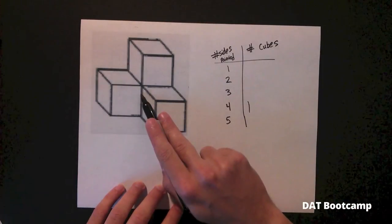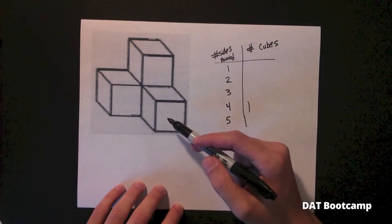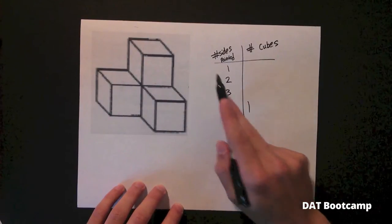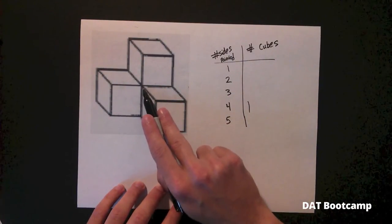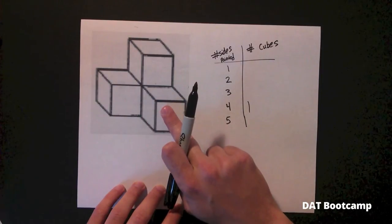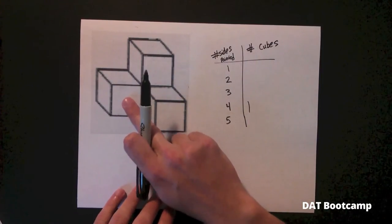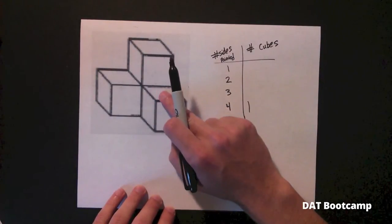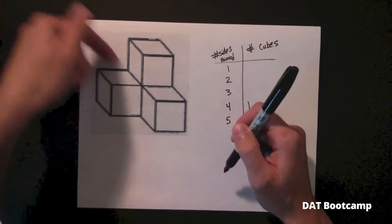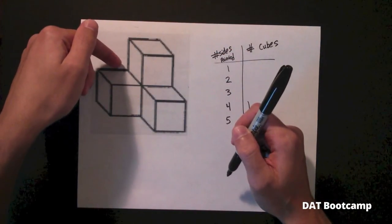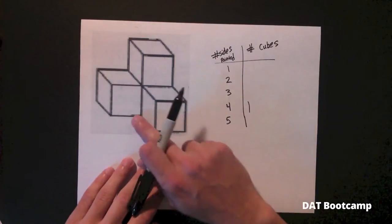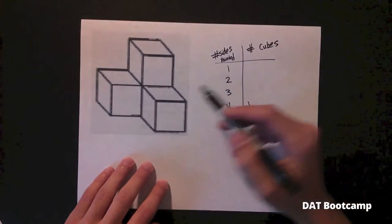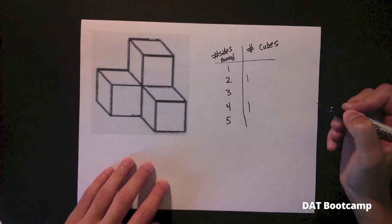Let's move on to the invisible cube. The invisible cube has two sides painted. The front cannot be painted because another cube is resting in front of it. The left cannot be painted because of this block. However, the right and the back sides of the invisible cube are exposed and will be painted. The bottom is never painted and the top cannot be painted because the top cube is resting on it. So that invisible cube has two of its sides painted.